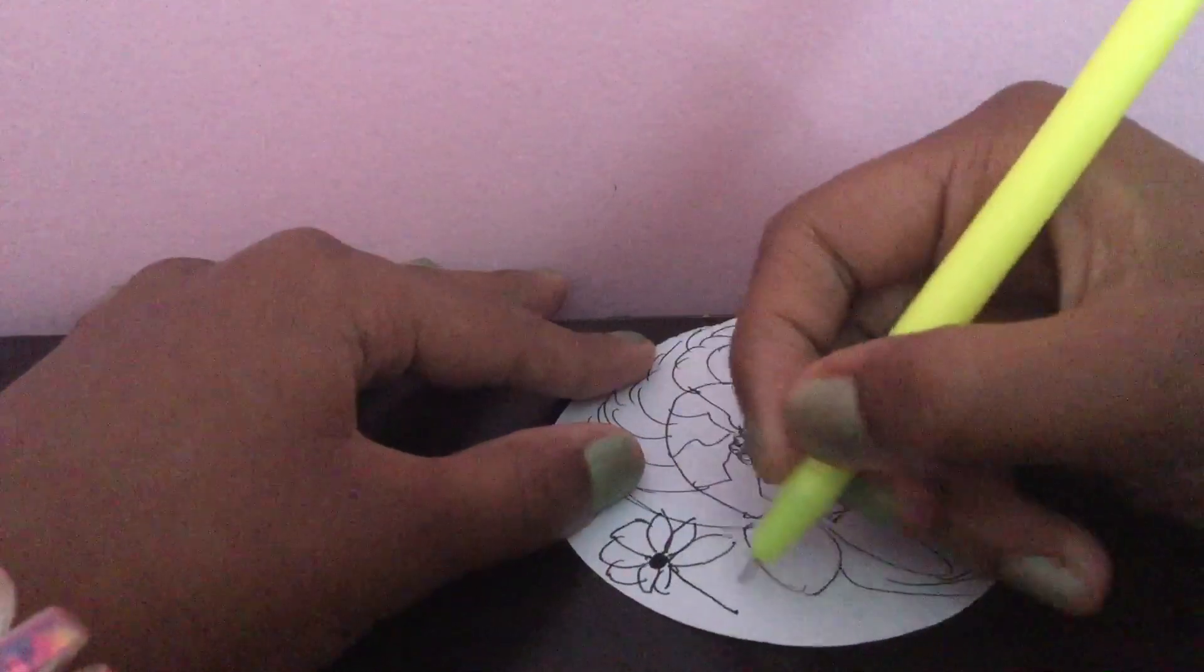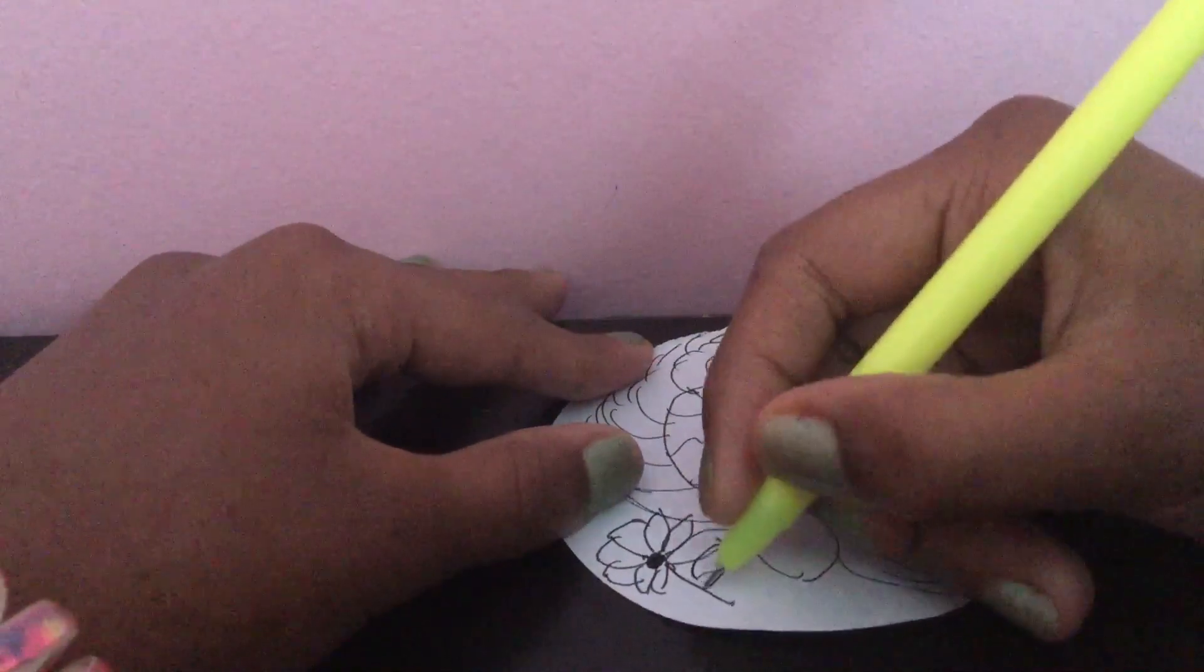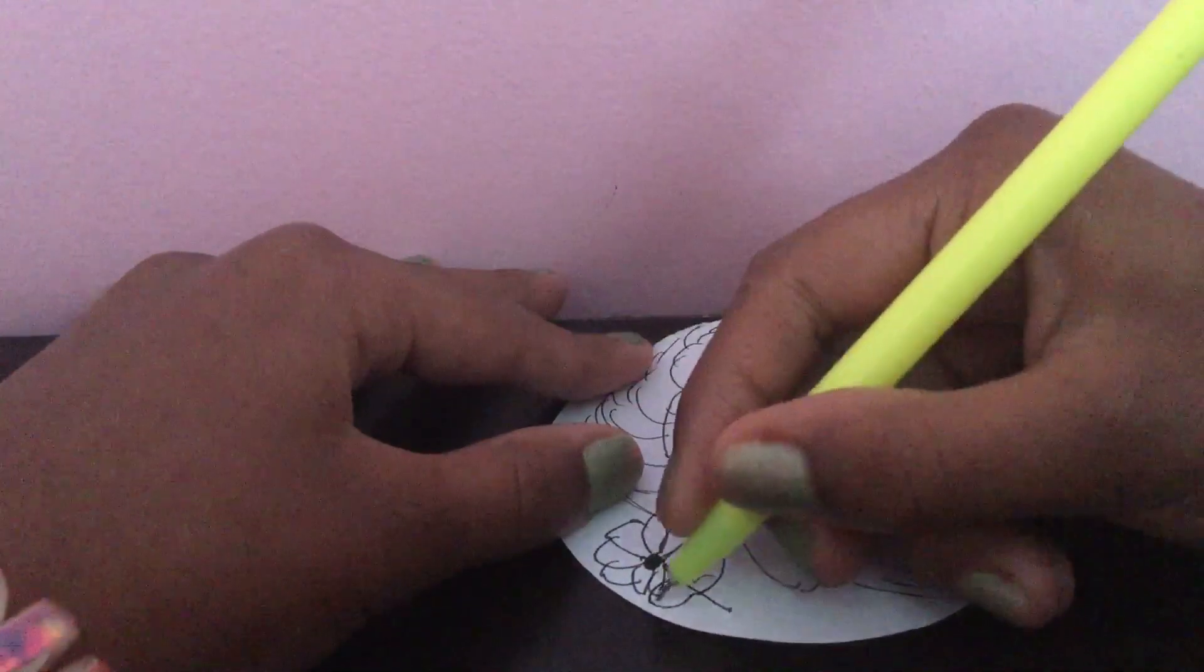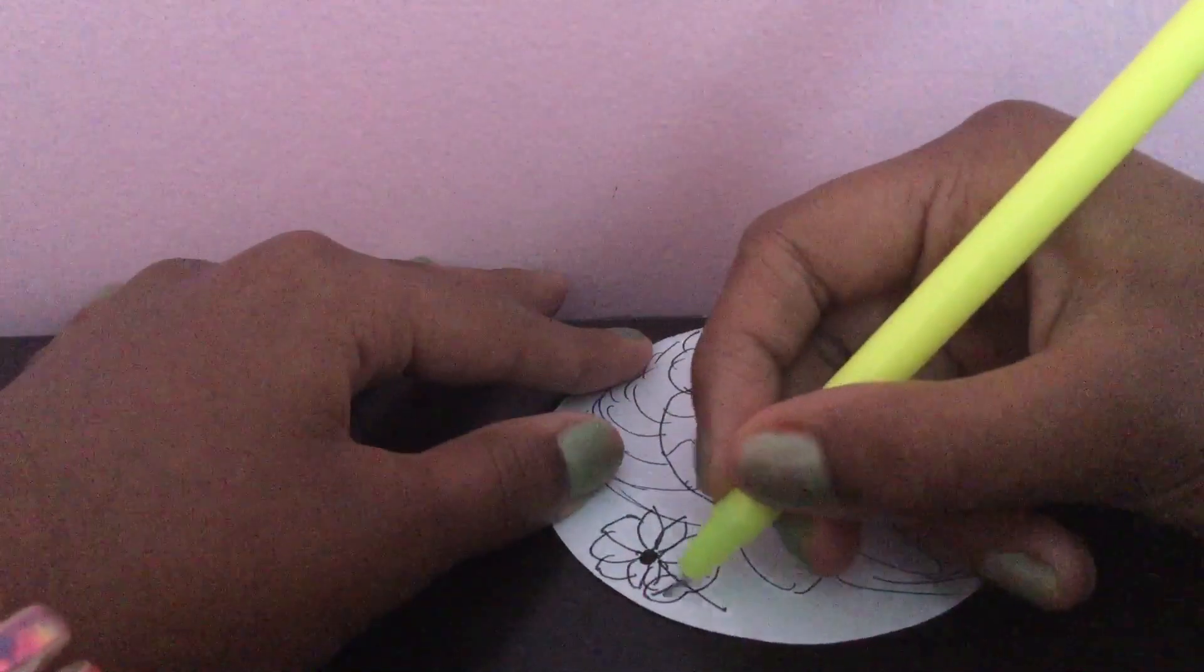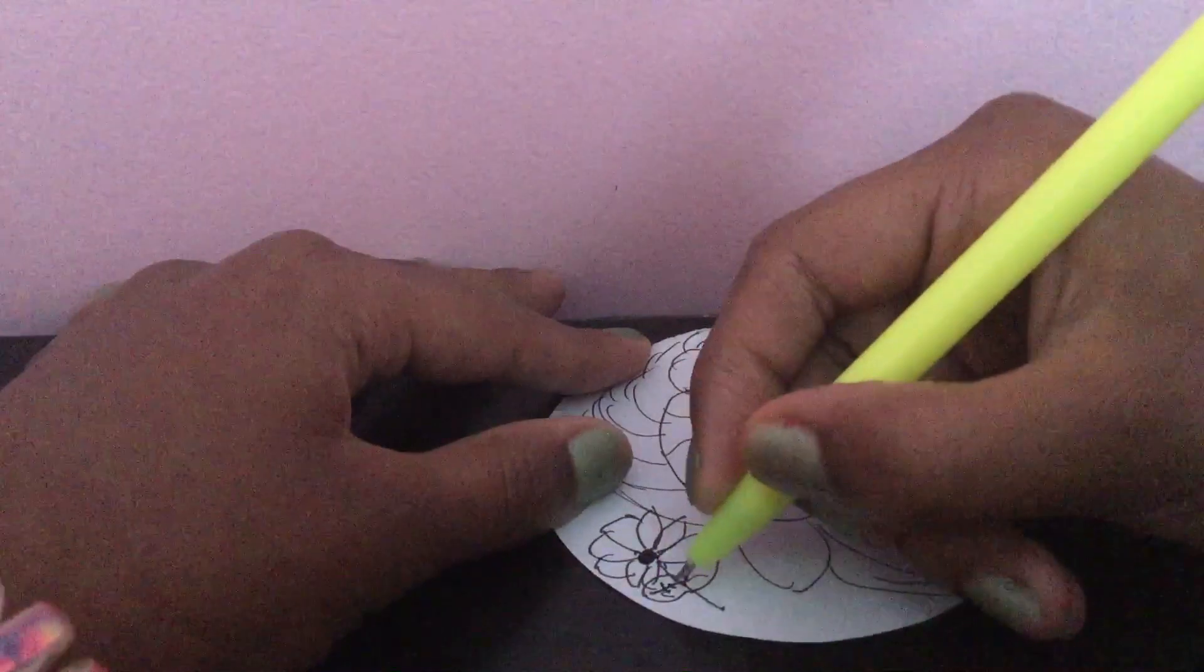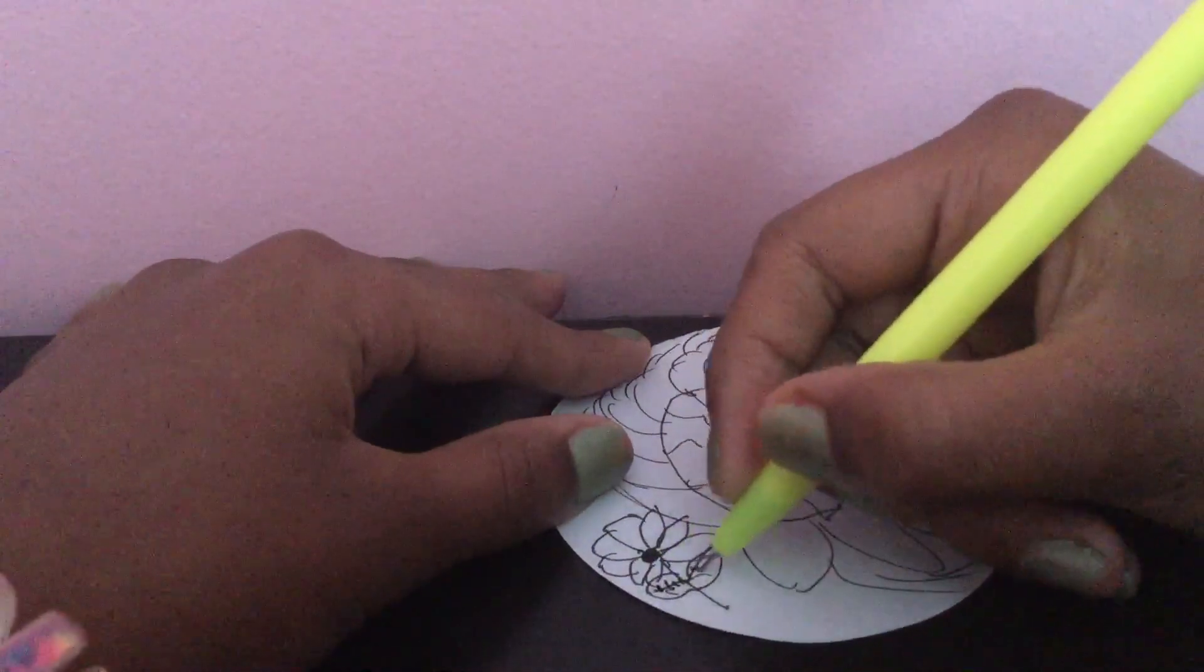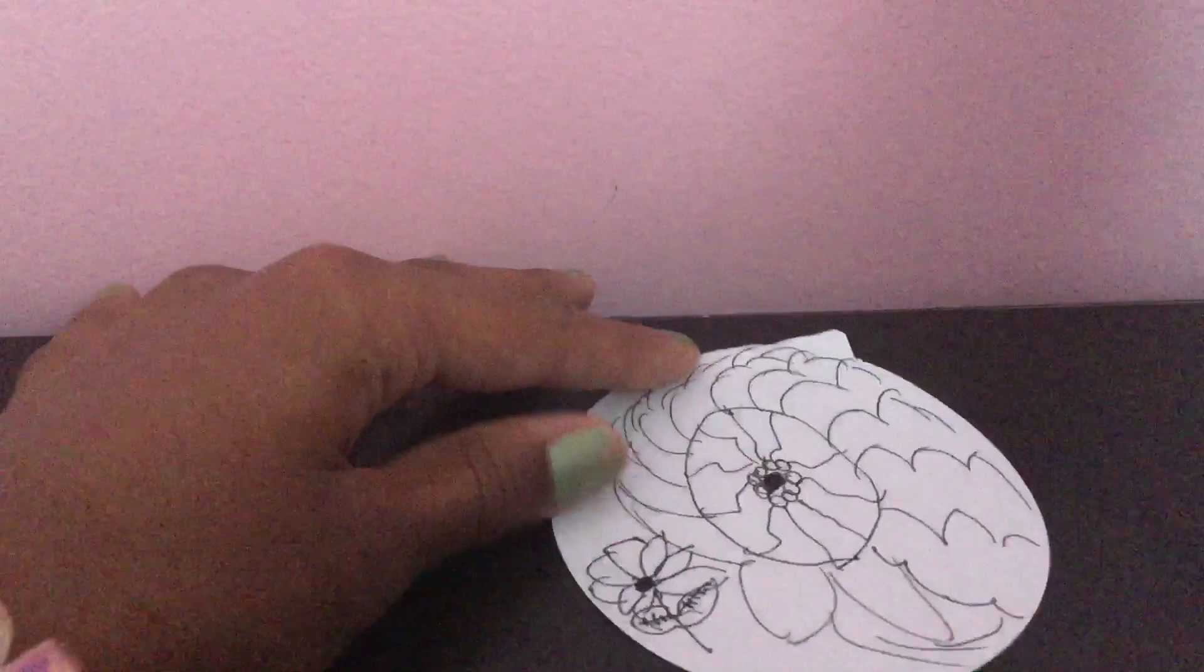And a line there. And two lines of the leaf. And a little bit lines there. It looks like stitches, but it isn't.